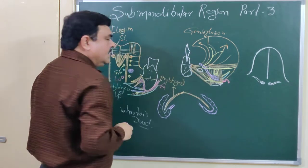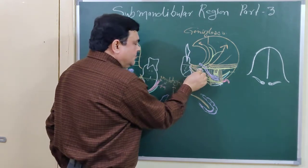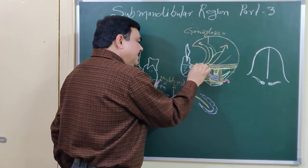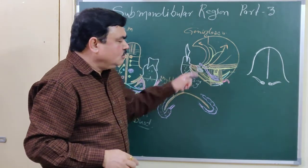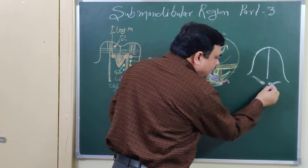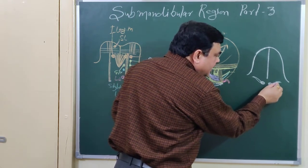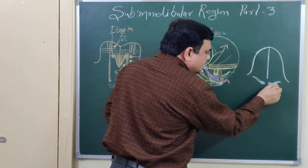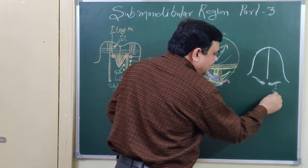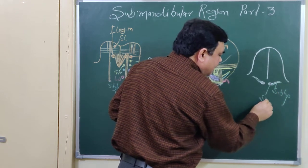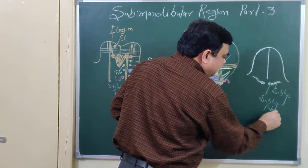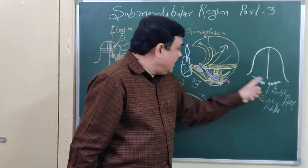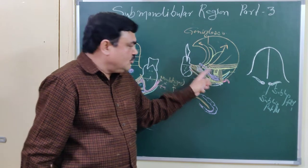This is Wharton's duct opening here at the summit of the sublingual papilla. Another gland lying nearby is the sublingual gland. The sublingual fold is present here — some ducts open along the sublingual fold, about seven to eight ducts, and this is the sublingual papilla.